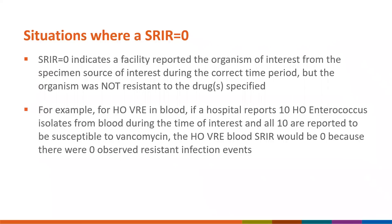For example, if facility A reports four hospital onset vancomycin-resistant Enterococcus events in blood during the first quarter of 2022, and six events were predicted based on the 2019 baseline SRIR VRE blood model, then facility A's blood hospital onset VRE SRIR for quarter one of 2022 is calculated as four observed events divided by six predicted events, for an SRIR of 0.667. We interpret this as facility A's number of hospital onset VRE isolates from blood in quarter one of 2022 being 0.7 times what was predicted. An SRIR value of zero indicates the facility reported the organism of interest from the specimen source during the correct time period, but the organism was not resistant to the specified drug.